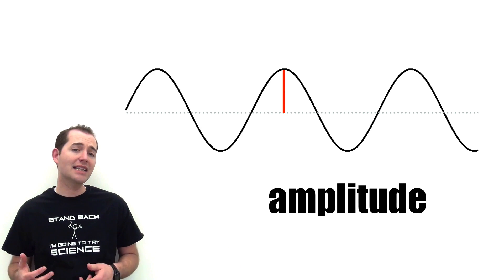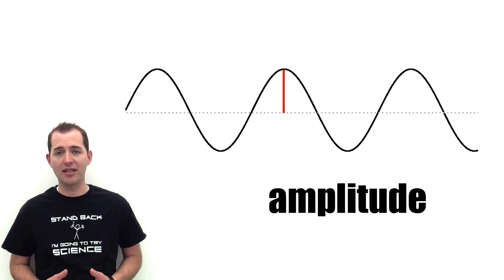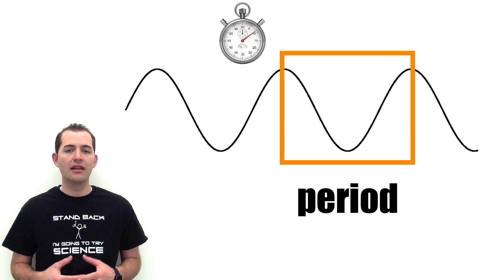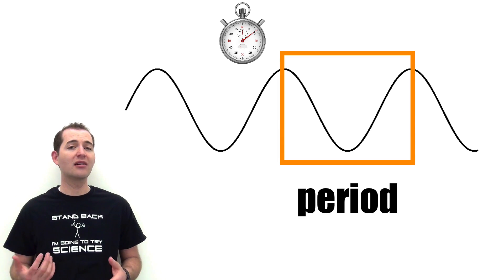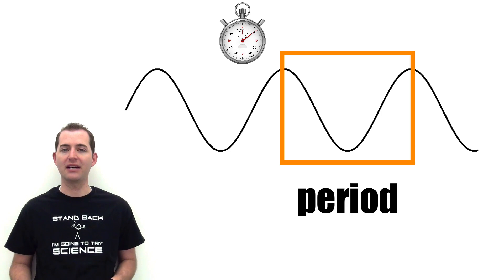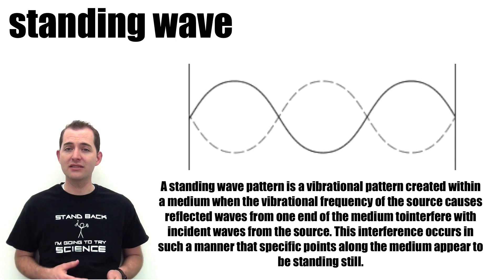Amplitude is the maximum displacement from equilibrium or the highest point on a wave. The period is the time it takes for a complete wave cycle to take place. The next two definitions are found on a standing transverse wave.